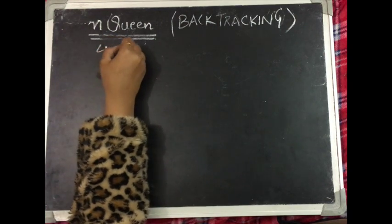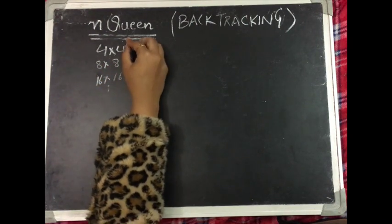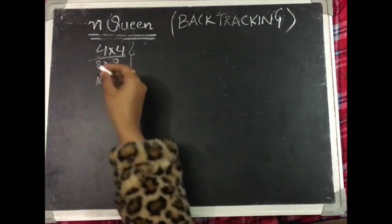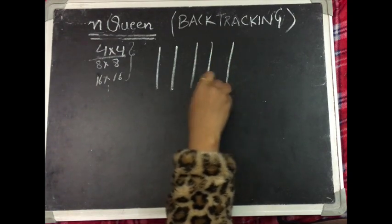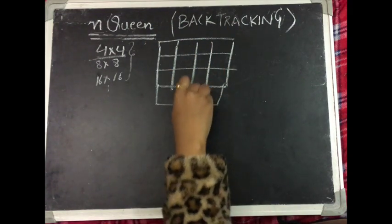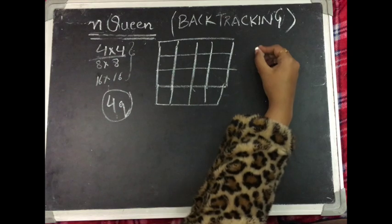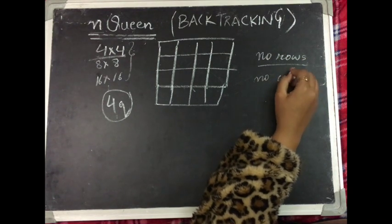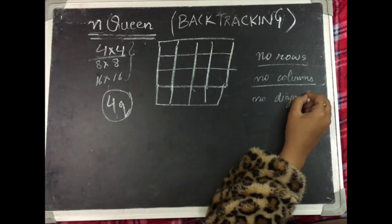Now we are going to solve the N-Queens problem. It will always be in the form of 4x4, 8x8, or 16x16 and so on. We will understand it for a 4x4 board. We make a chess board of 16 cells and place 4 queens such that no two queens lie in the same row, no two queens lie in the same column, and no two queens lie in the same diagonal.